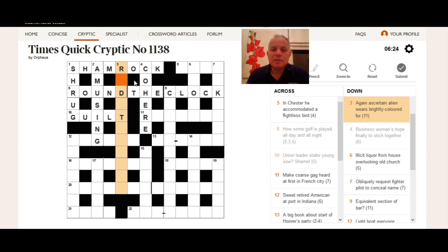Now, three down. Again, a certain. Well, given the words we have here, the letters in the grid, R something, D something, T. It looks a lot like redetermined, which could easily be, again, a certain. So alien wears brightly colored fur. Well, an alien in these crosswords is always pretty much always ET. So what is ET wearing in redetermined? He's wearing red ermine, which is an amusing, if possibly impossible, brightly colored fur.